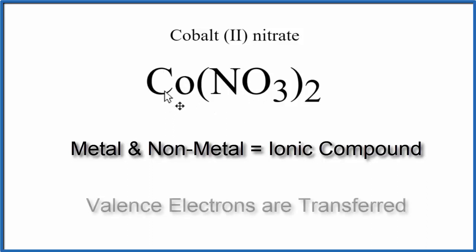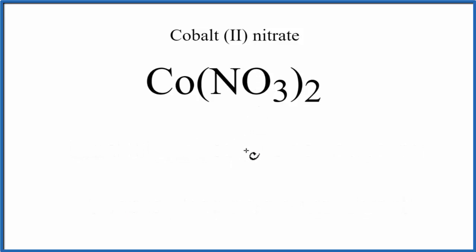So the metal in an ionic compound will transfer electrons to the non-metals. We'll write our cobalt, and then we'll put a nitrate, the NO3, on either side.